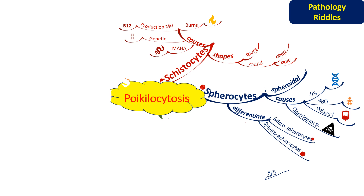The causes of schistocytes include thermal injury like in severe burns, production disorders like megaloblastic anemia or dyserythropoiesis, genetic diseases like thalassemia, or microangiopathic hemolytic anemia. Causes of the latter include disseminated intravascular coagulation, TTP, and HUS.